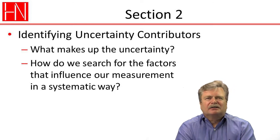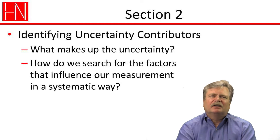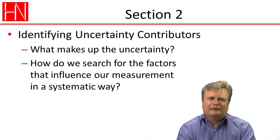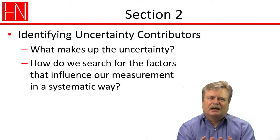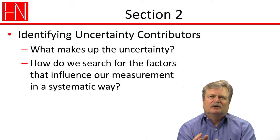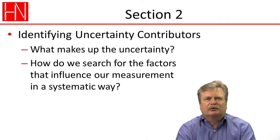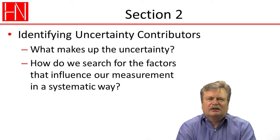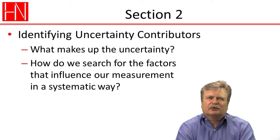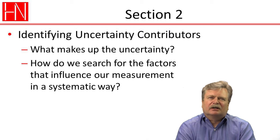Then once we've talked about the concept in section two, we're going to talk about how do we identify the contributors to the uncertainty — how do we come up with a list of things that make our measuring process uncertain. It's been my experience that this is really the most difficult part of it all, and also the most important part. If you can't properly identify the top three uncertainty contributors, then your uncertainty budget is not going to have any relationship to the real uncertainty of your measurement. But if you can successfully identify those top three contributors, then your budget is really as good as it's going to get. So the most important part is to come up with the correct list of contributors.